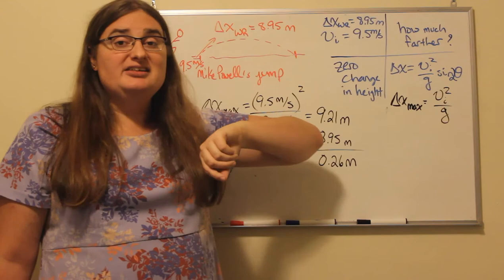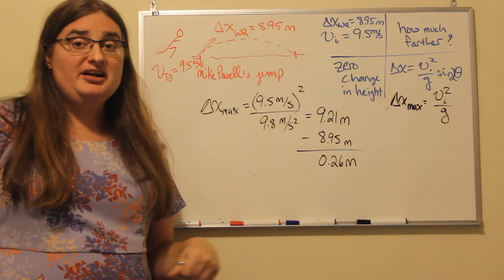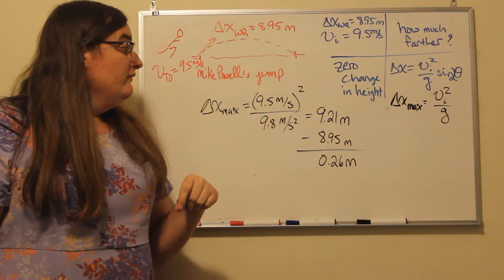The maximum range you could ever achieve for a projectile, if you could ignore all effects of air, is the initial velocity squared divided by the strength of gravity.